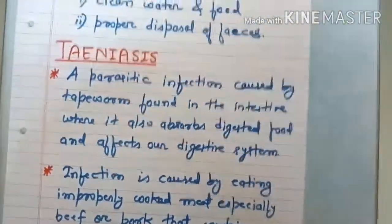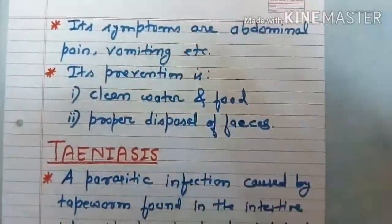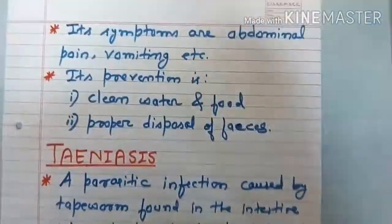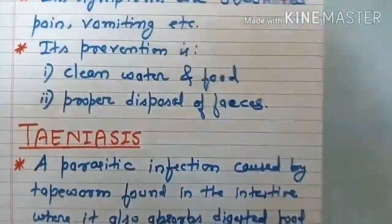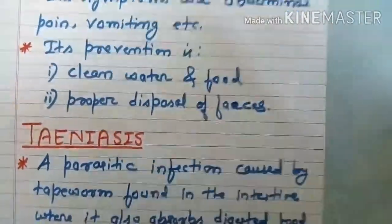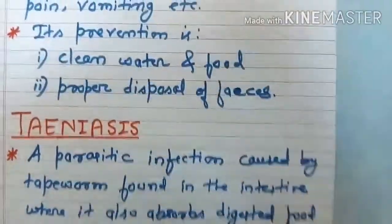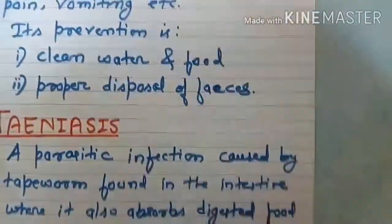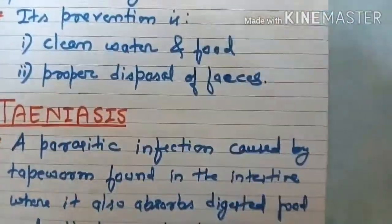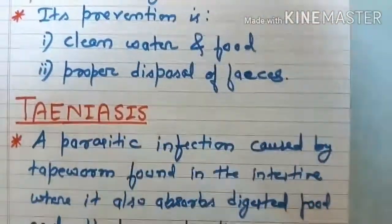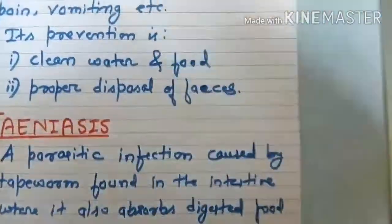The symptoms of ascariasis are abdominal pain, vomiting, etc. Its prevention includes drinking clean water, eating clean food, and proper disposal of faeces — meaning human excreta. If we do proper disposal of faeces, this disease will not spread.